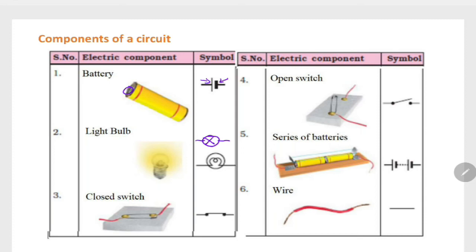A closed switch doesn't have a gap or break, so it is like this. An open switch has a gap or break, so it is like this symbol. A series of batteries means you have two batteries. As I say, this is a positive one and that's the negative one. The wire is like a line which transports electricity to the circuit.